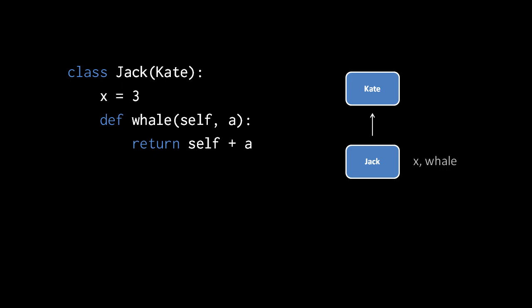Class statements superficially look a bit like function definitions. Instead of def, you have the reserved word class, and then you put the name to which the newly created class object will be assigned. Here the name is Jack, and then following that in parentheses rather than an argument list, we put simply an expression which returns a class. This becomes the parent of the new class we are creating.